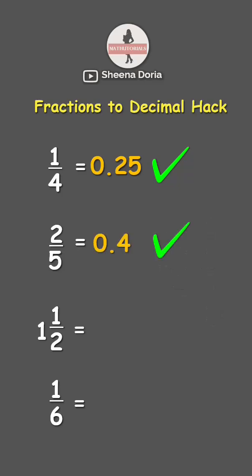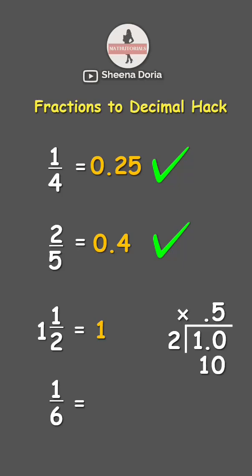Next one, we have 1 and 1 half. Here we have a whole number, which is 1, so we can simply copy 1. And now let's convert 1 half. So 1 divided by 2. Since 1 is smaller than 2, let's add 0.0. So 10 divided by 2 is 5. 5 times 2 is 10, and 10 minus 10 is 0. Don't forget to put the decimal point in our quotient. It means that 1 half is equivalent to 0.5. And if we combine that to the whole number 1, the answer will be 1.5.